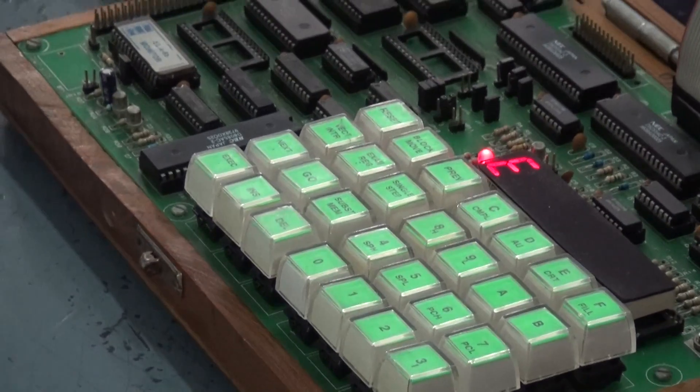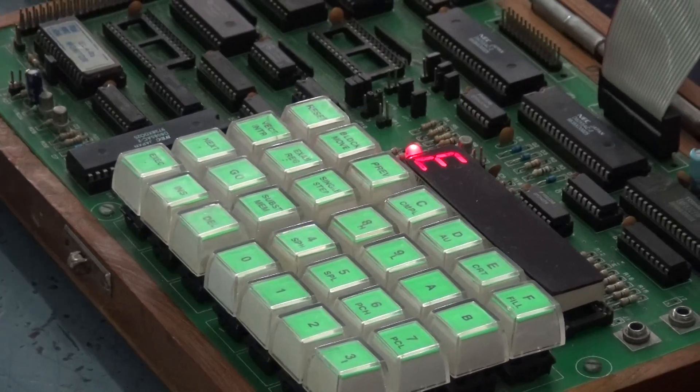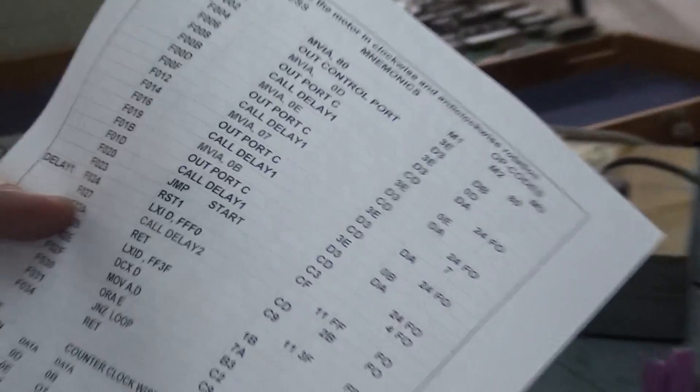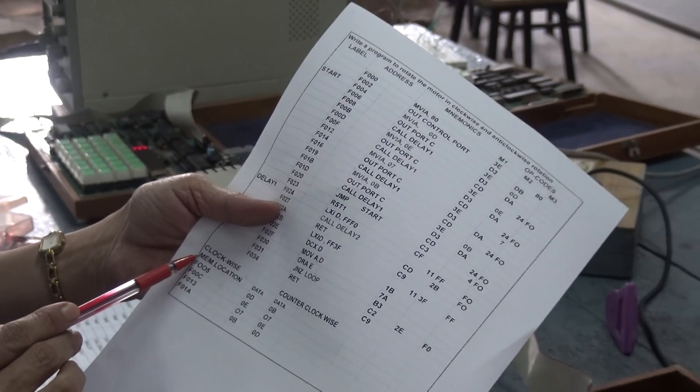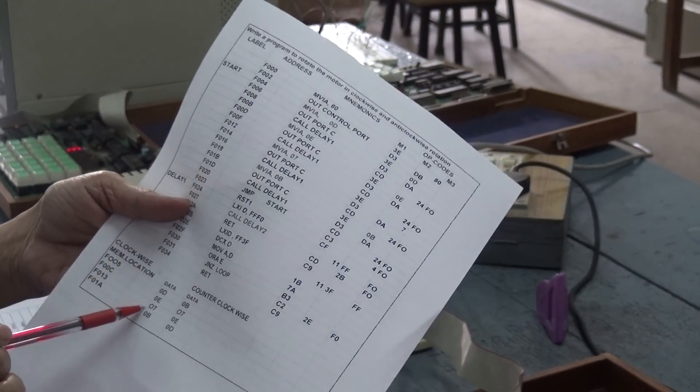Now, what is it that you are doing? You are sending this data 0D, 0E, 07, 0B in a particular order for the clock to move in the clockwise direction, for the stepper motor to move in the clockwise direction.